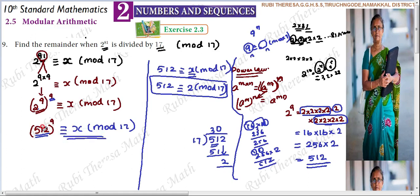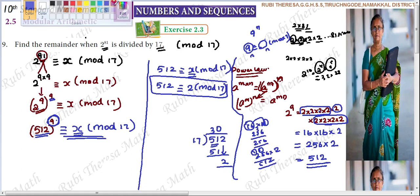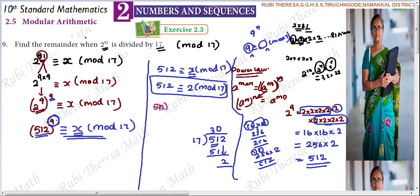So if the left-hand side integer 512 is congruent to 2 mod 70, and the left-hand side is raised to the power 9, then 2 should also be raised to the power 9. So 512 to the power 9 ≡ 2 to the power 9 (mod 70). Now 2 to the power 9 is exactly 512.